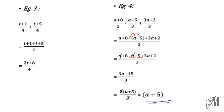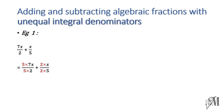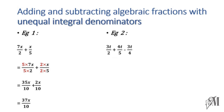Now let's move on to addition and subtraction of algebraic fractions with unequal integral denominators. When denominators are not equal, you must equate them. For 2 and 5, the LCM is 10 — multiply the first fraction by 5 and the second by 2. You get the common denominator as 10. 35x plus 2x is 37x over 10.